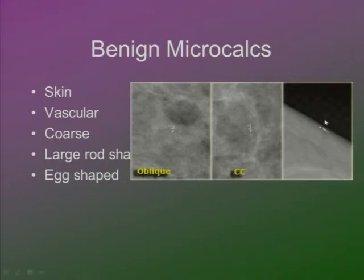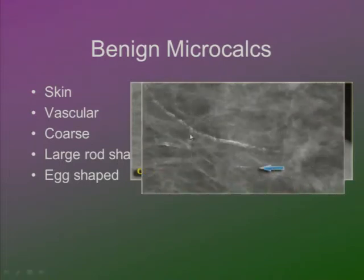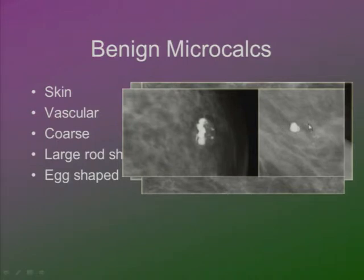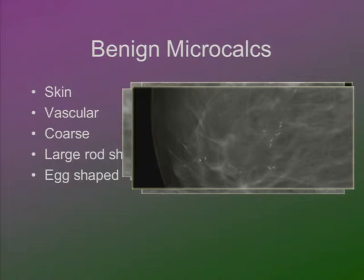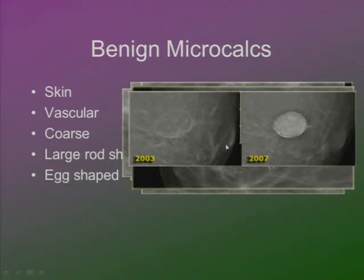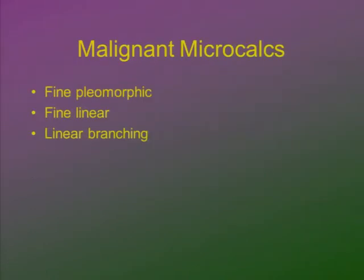With a very superficial tangential view you can see skin calcifications close to the skin. Vascular calcifications follow the anatomy of the vessel — you can trace the track of the vessel in mammography. Coarse or popcorn-like calcifications are usually from degenerated fibroadenomas. Large rod-like calcifications are seen in mastitis, and the eggshell type is seen in fat cysts, fat necrosis, or oily cysts.